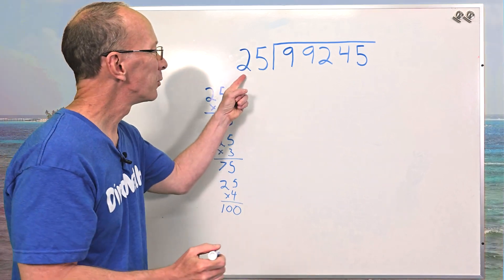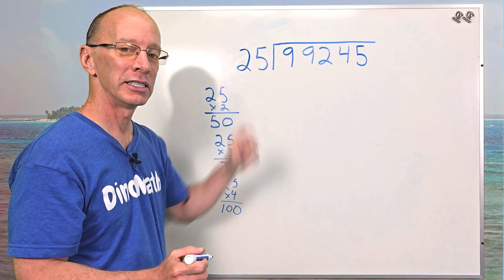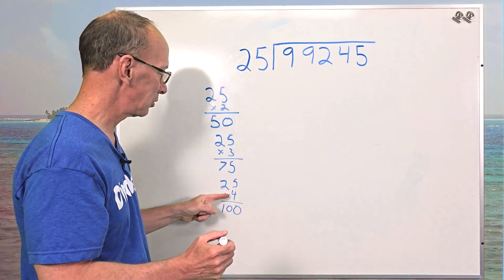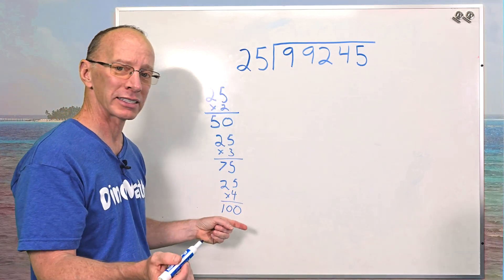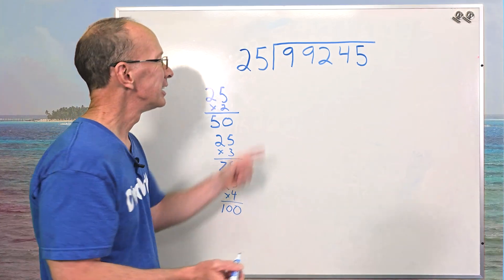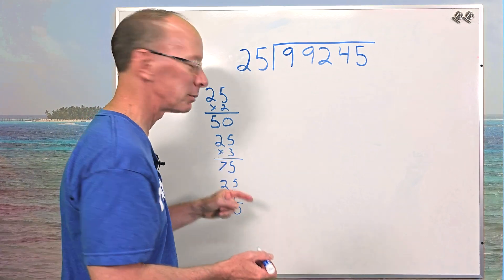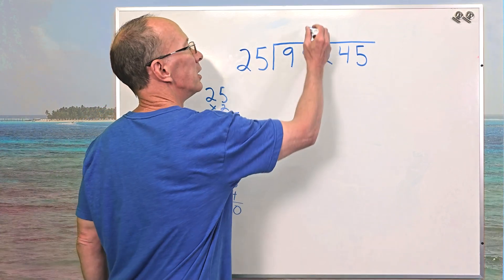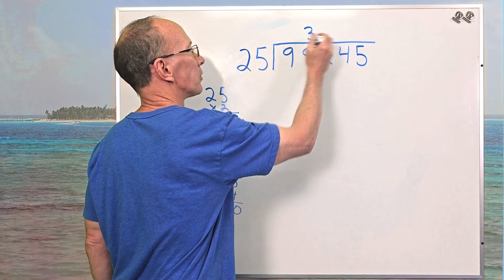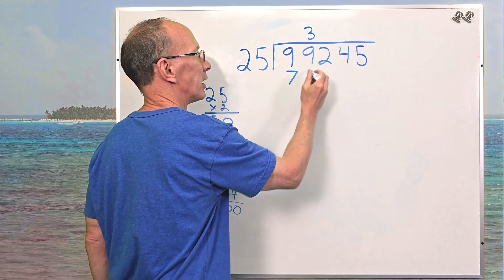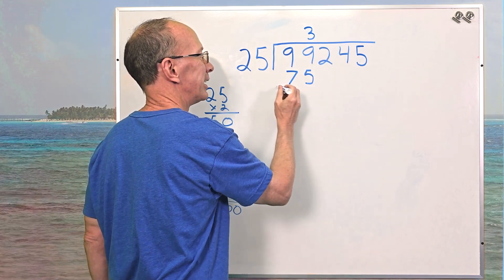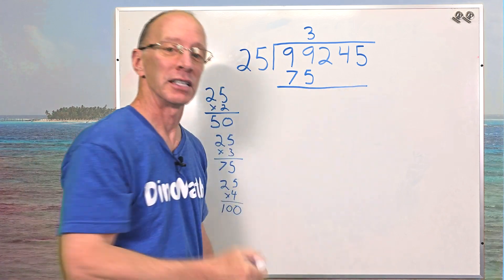All right. So with 25 now I have to put it into 99. Can I do four? No, that's too big. That number is going to be too big, isn't it? So we have to bring it down to three. All right. So 25 times three would be 75. So I'm going to put three right here. So three times 25 would be 75. And now my next step is subtraction.